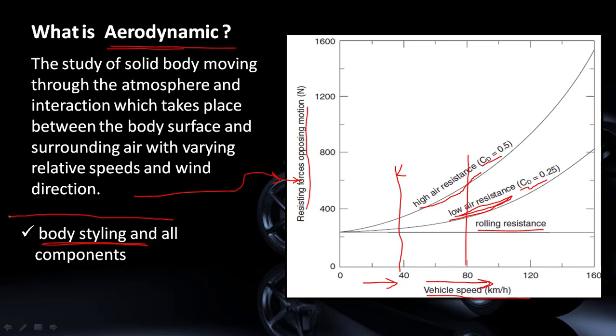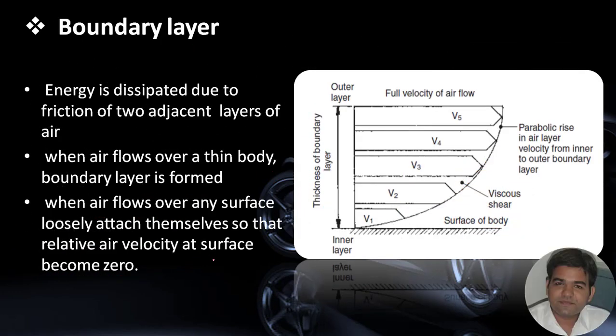Automotive manufacturers have to consider such parameters while choosing a body style for any vehicle segment. Now the first term is boundary layer. Since we are discussing aerodynamics, air is the moving fluid. Air has viscosity — that means it has internal friction between adjacent layers of air whenever there is relative air movement. Consequently, when there is sliding between adjacent layers of air, energy is dissipated due to the friction of those two adjacent layers.